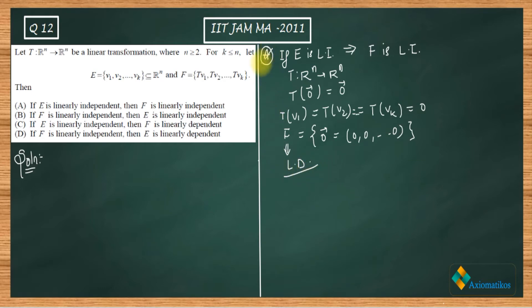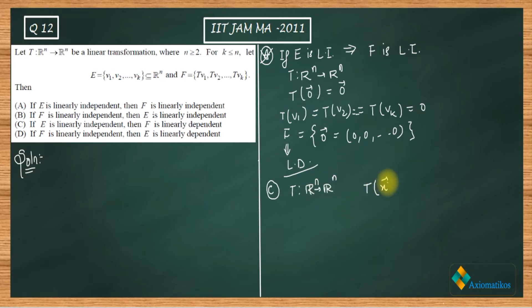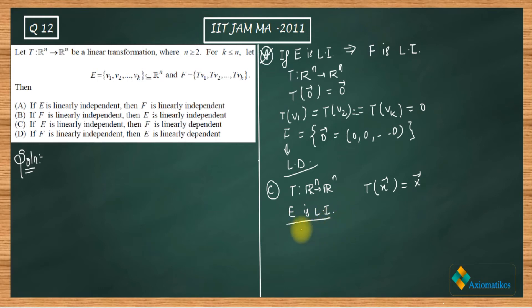Option C says: if E is linearly independent, then F is linearly dependent. To eliminate this, choose the identity transformation, where T(x) = x. Since it is the identity transformation, F and E are exactly the same set. So if E is linearly independent, F is also linearly independent — not dependent. Option C is therefore incorrect.